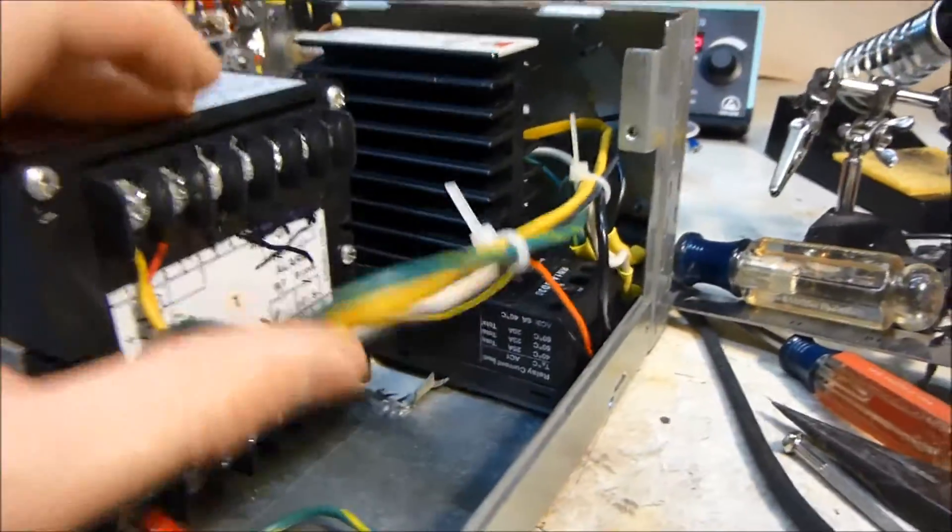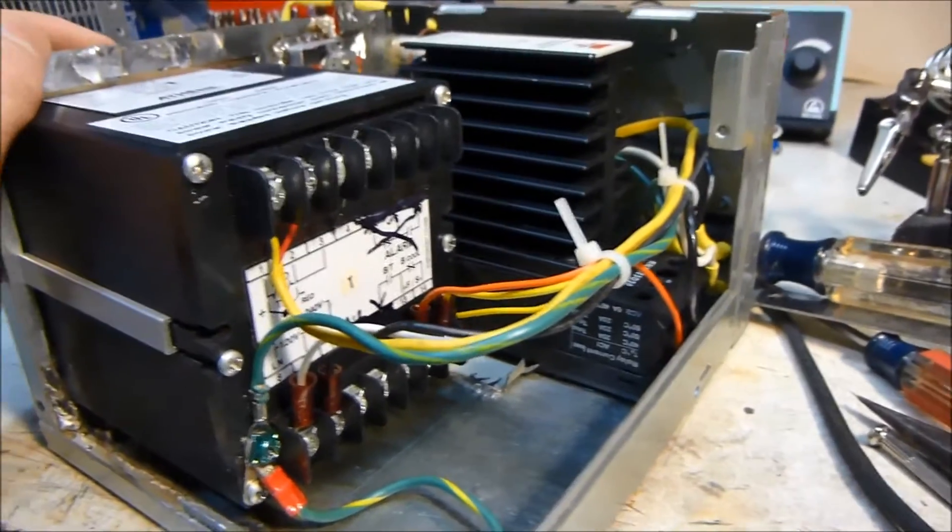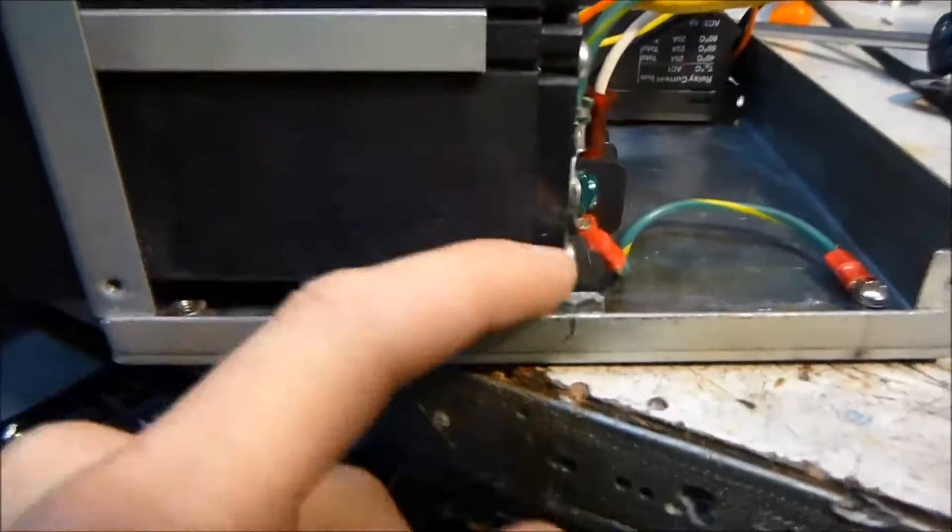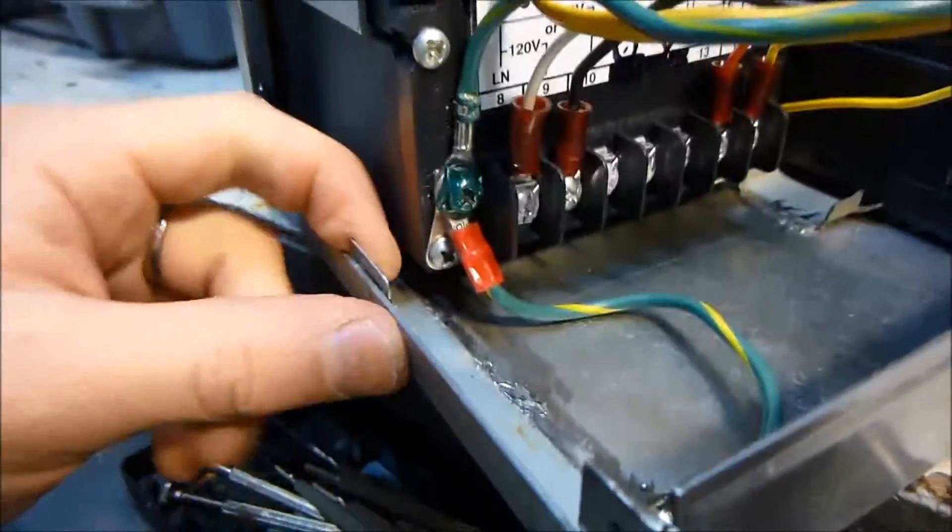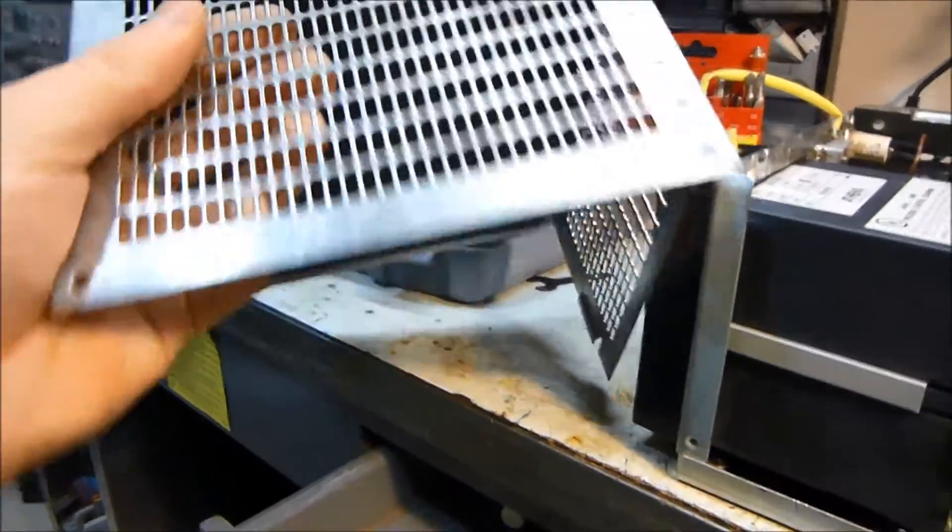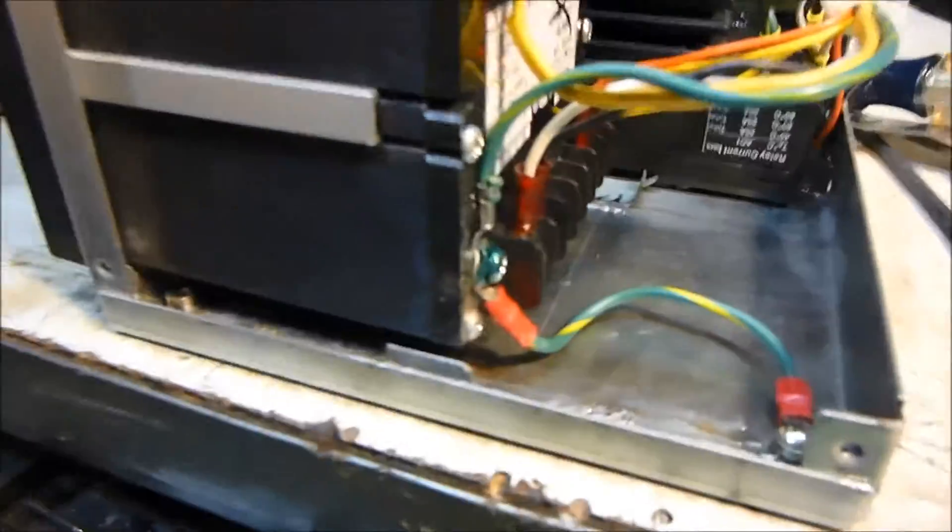I also added this little metal tab right here, just soldered that over there. That's because the casing right there was kind of flimsy, so when you pick it up it would bend in and I didn't really like that. I added that little bit of metal, quick fix.